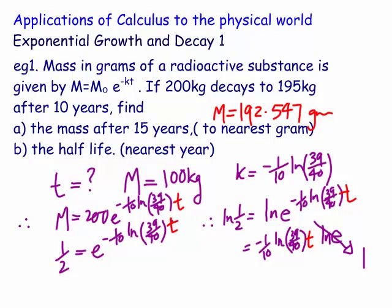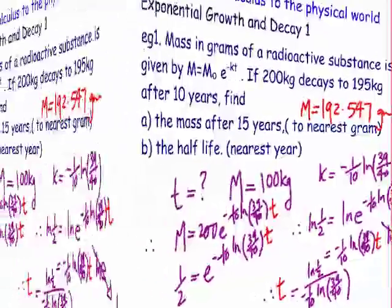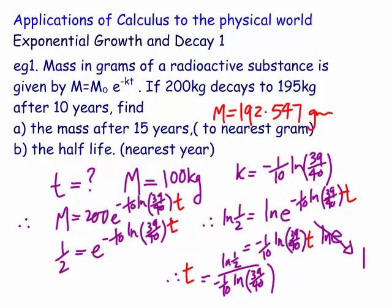This allows us to solve for t. Therefore, t is just equal to ln of a half all over this one here, which is minus 1 over 10 ln 39 over 40. So this is the red t here, the time we're after. Now what is the time? Obviously this is just a calculator exercise. You have to be a little bit careful. The top is a negative and the bottom is a negative, so that should turn out to be a positive time. When you actually work it out, it just works out to be, to the nearest year, 274 years.